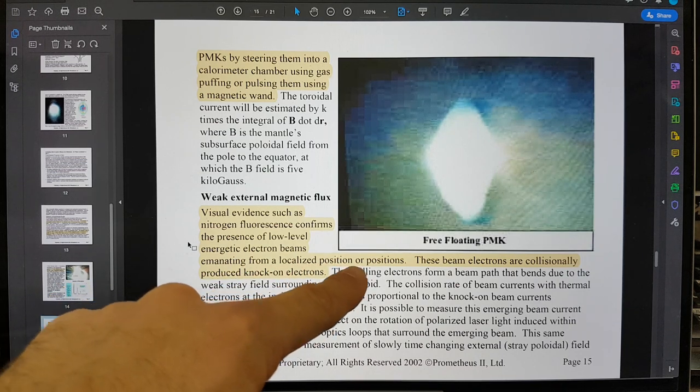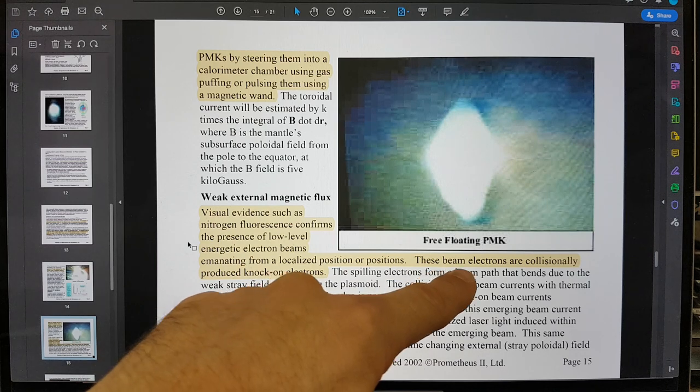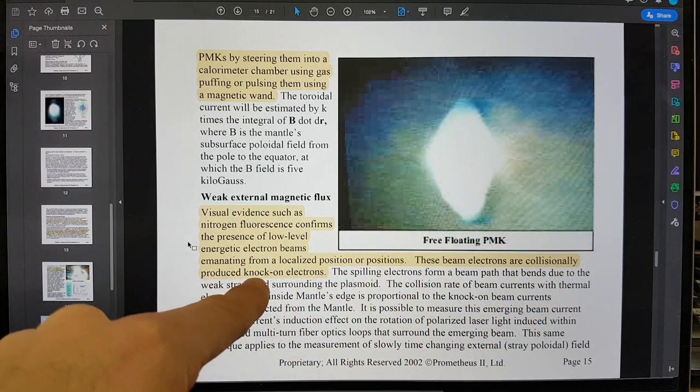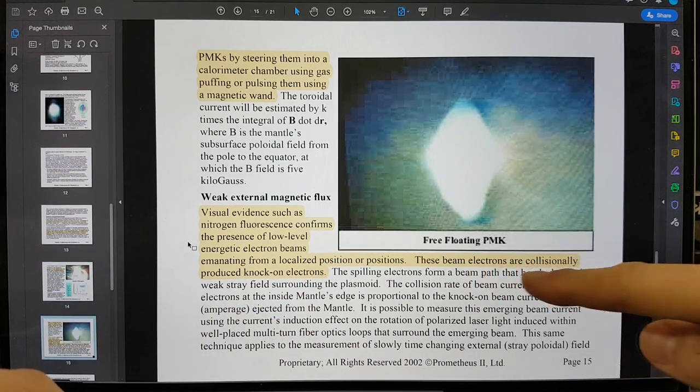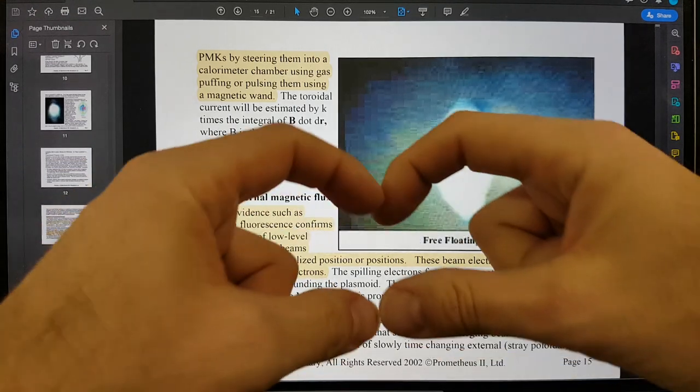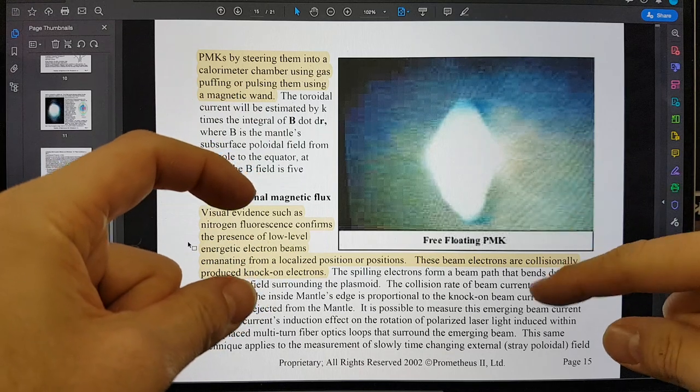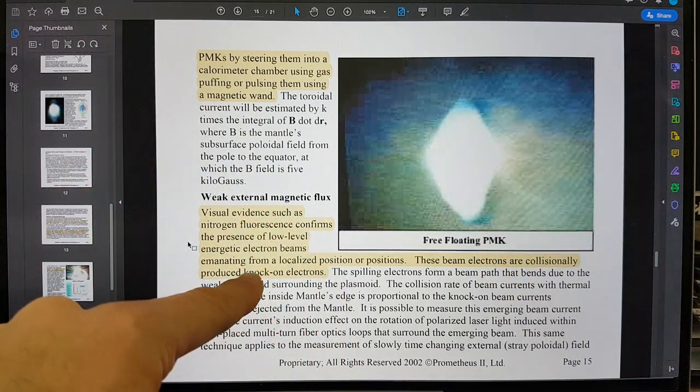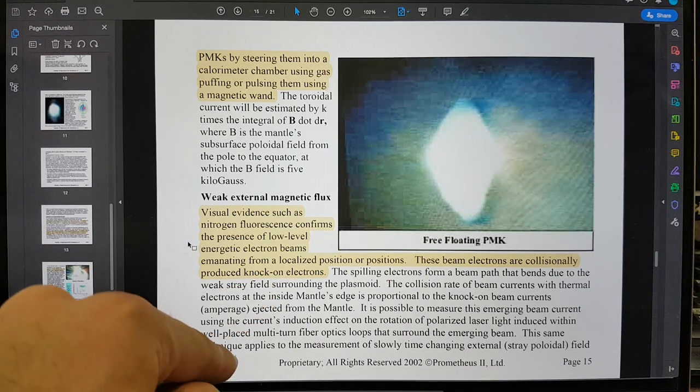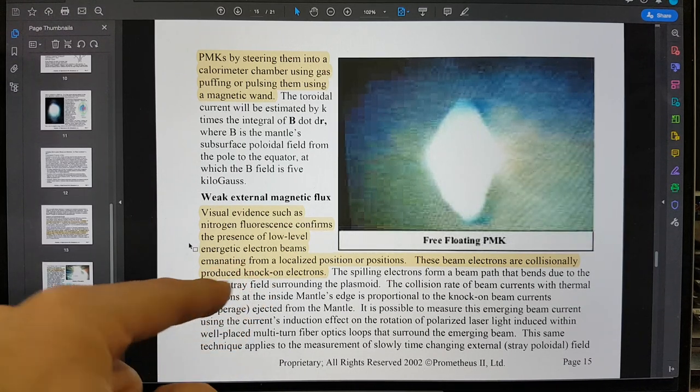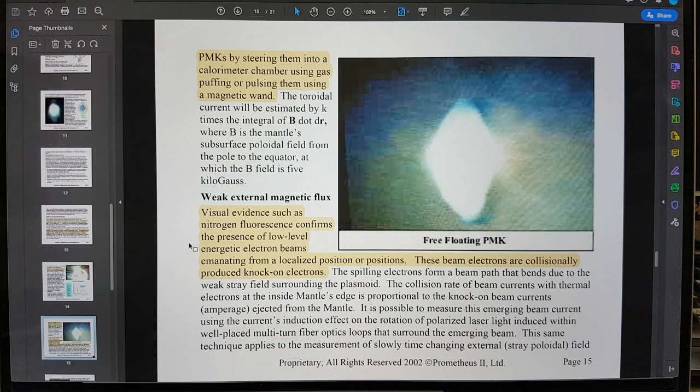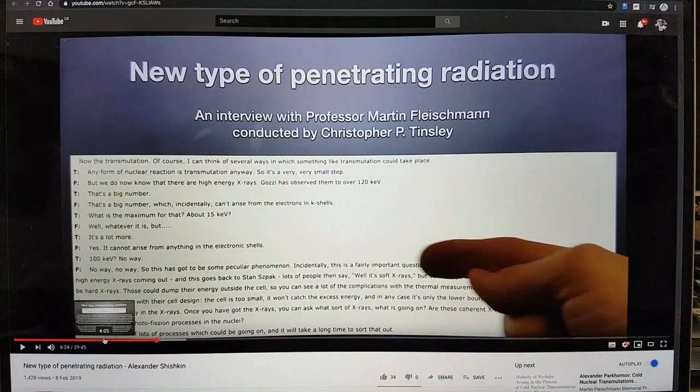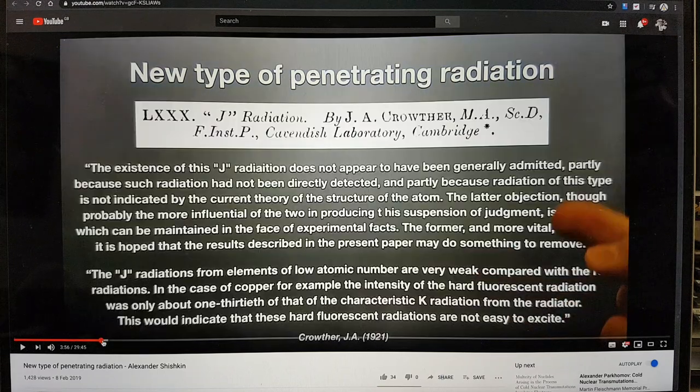Visual evidence such as nitrogen fluorescence confirms the presence of low-level energetic electron beams emanating from a localized position or positions. These beam electrons are collisionally produced knock-on electrons. These are the kind of electrons that Shoulders said you could pass down a traveling wave tube and you could actually harness electrons by capturing these high energy electrons that come out. And Shishkin says that they come out I think 10 KV or maybe that's, I think he says somewhere here.